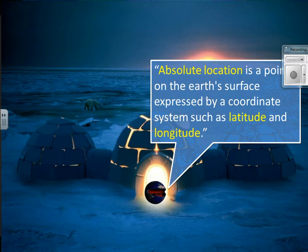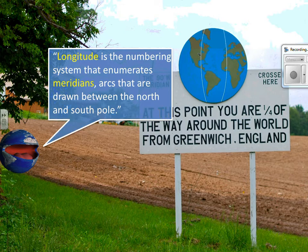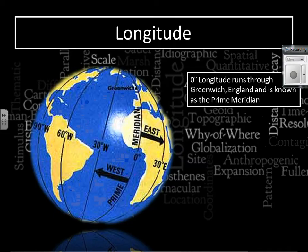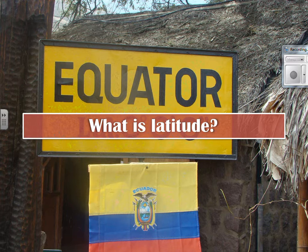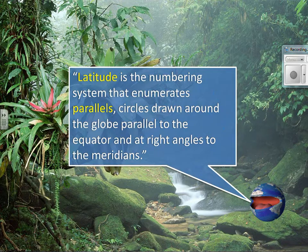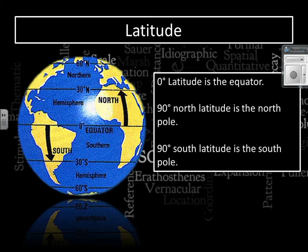Absolute location uses latitude and longitude. Longitude lines are the meridians — drawn from north to south, measuring how far you are east or west of that meridian. The prime meridian is zero degrees longitude, and Greenwich, England is where the prime meridian is — that's why we talk about Greenwich Mean Time. Latitude goes the opposite direction, running east to west. Also known as parallels, latitude lines measure north to south of the equator. The equator is zero degrees latitude, while the prime meridian is zero degrees longitude.